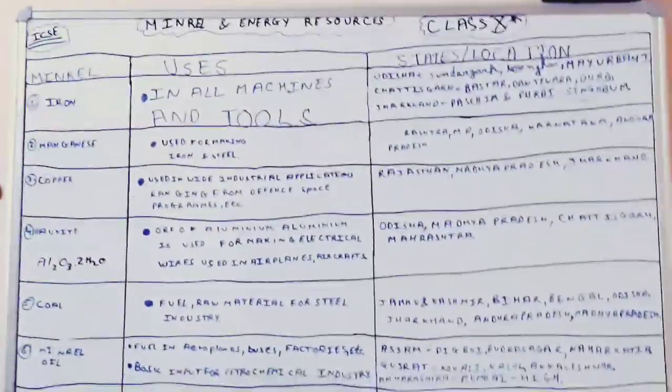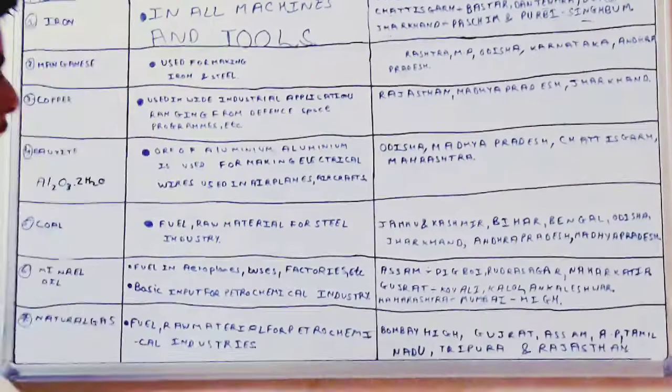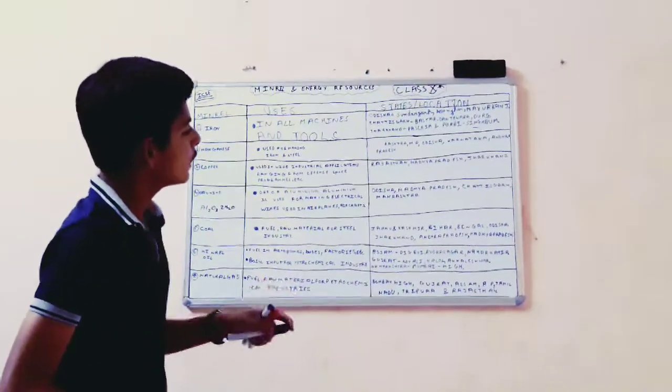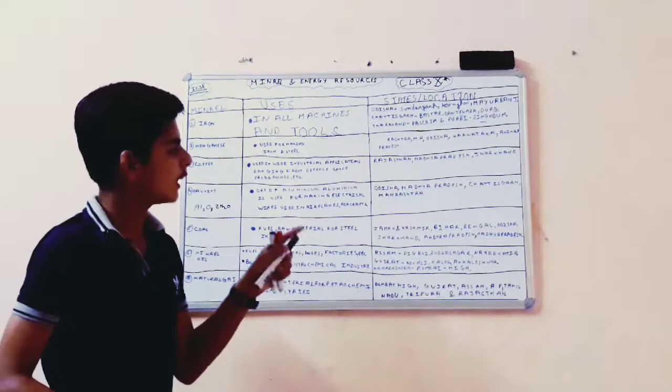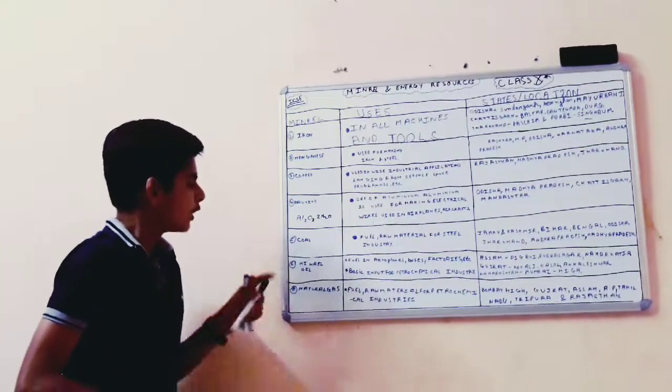Now Jammu and Kashmir, Bihar, West Bengal, Odisha, Jharkhand, Andhra Pradesh, Madhya Pradesh, Odisha, Madhya Pradesh, Gujarat and Maharashtra are the states where this bauxite is formed.